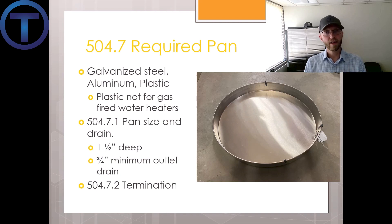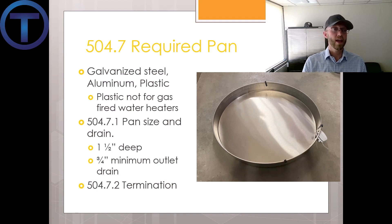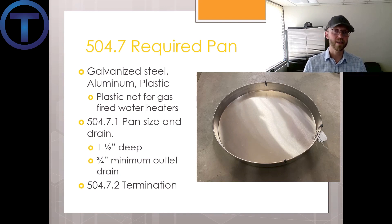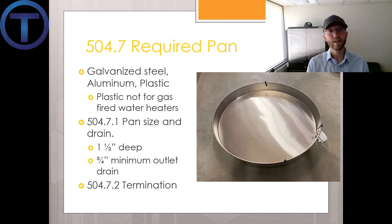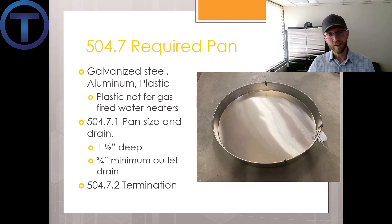Whereas if the water heater is sitting on a cement floor with a floor drain nearby, a leak is not going to damage structure — it'll make a mess but it's not unsafe. So we put a pan under anywhere we can recognize that a leak would cause damage. The pan can be made of galvanized steel, aluminum, or plastic — but plastic cannot be used under a gas-fired water heater because the gas and heat affect the plastic, making it brittle.